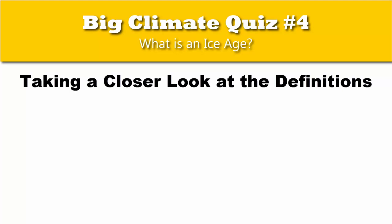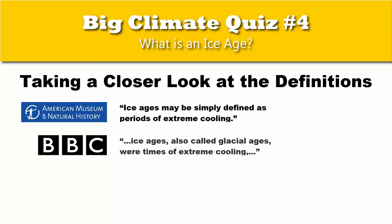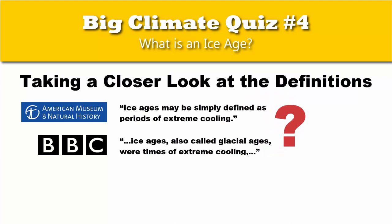Taking a closer look at the definitions: the American Museum of Natural History was describing our Holocene when they said ice ages may be simply defined as periods of extreme cooling. The Holocene is far cooler than the Pliocene, Miocene, and earlier epochs. The same applies to the BBC when they described ice ages as times of extreme cooling. The problem with these two definitions is that they don't quantify what is meant by extreme cooling or the amount of glaciation — leaving their definitions open to loose interpretation. That's sloppy thinking on their part.